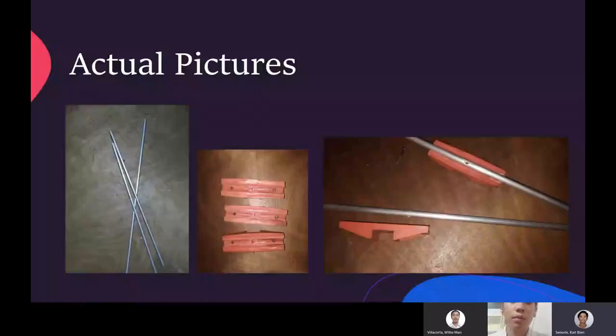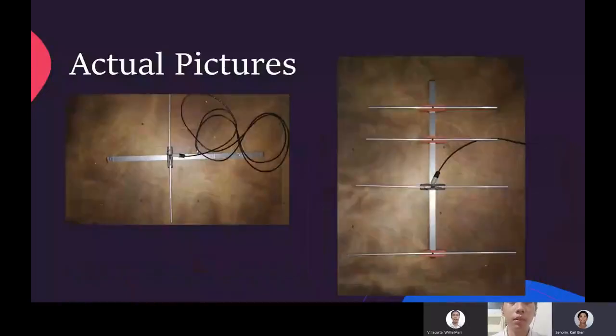In this slide, we can see the actual features that was used on the project. The second feature is the aluminum tubes that is fastened with plastic holders. The next slide, we can see one of the aluminum tubes being connected to a matching transformer, which will be connected to the TV. This aluminum tube will also be connected to the boom along with the other aluminum tubes with the plastic holders. As we can see in the second picture.